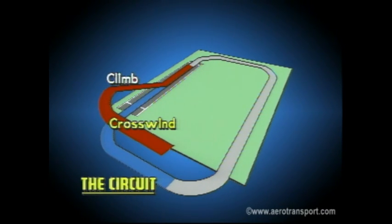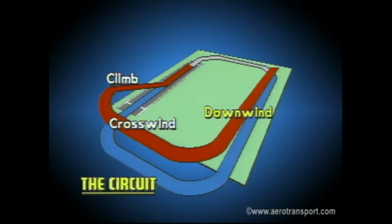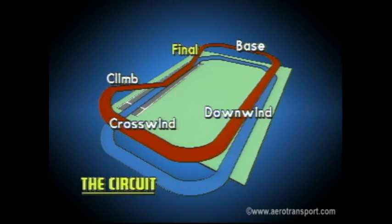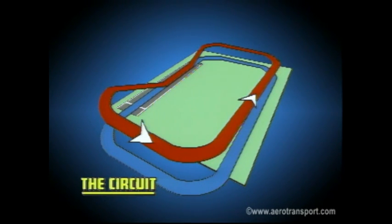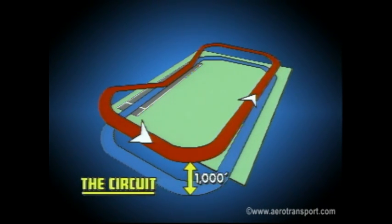90 degrees to the crosswind leg is the downwind leg. Another 90 degree turn puts you on the base leg. Lastly there's the final approach leg. All circuits run counterclockwise unless special conditions exist and there is authorized advice to the contrary. Unless told otherwise, all normal circuits are 1,000 feet above ground level.